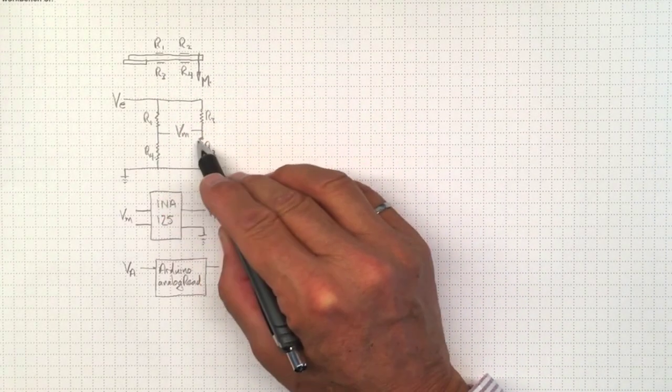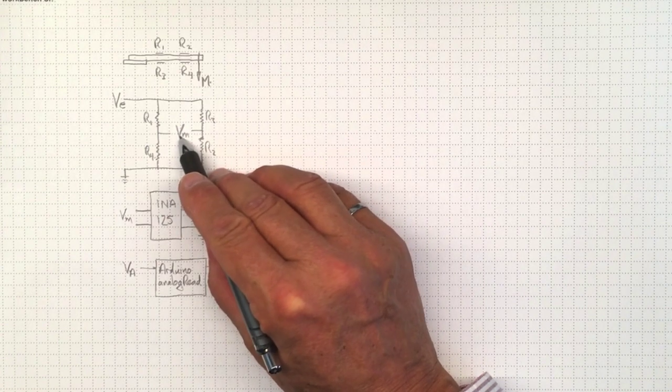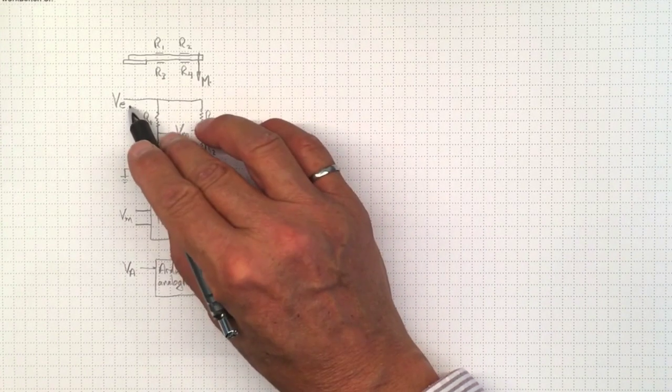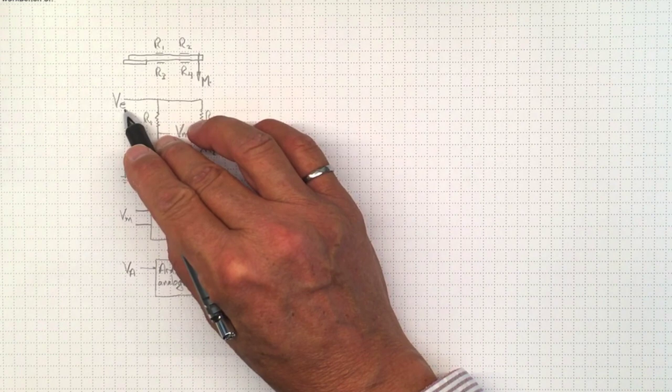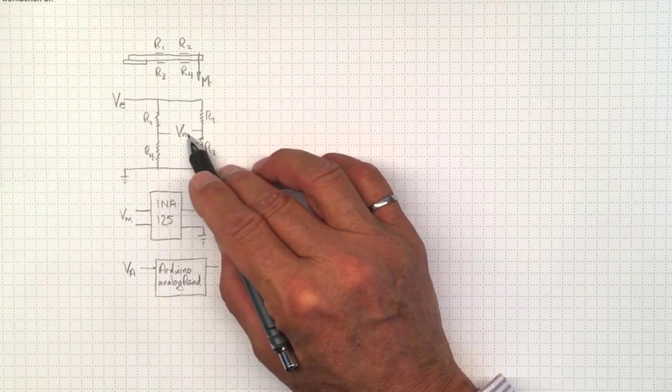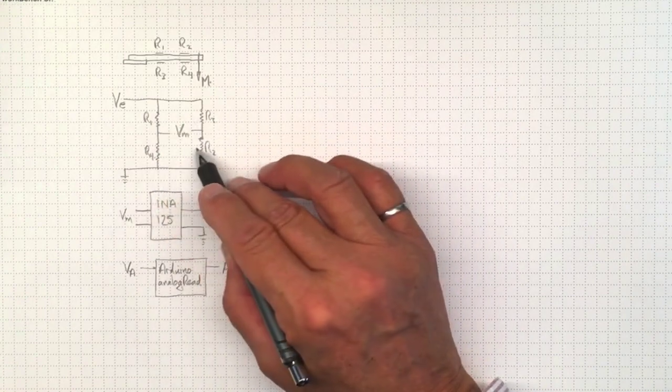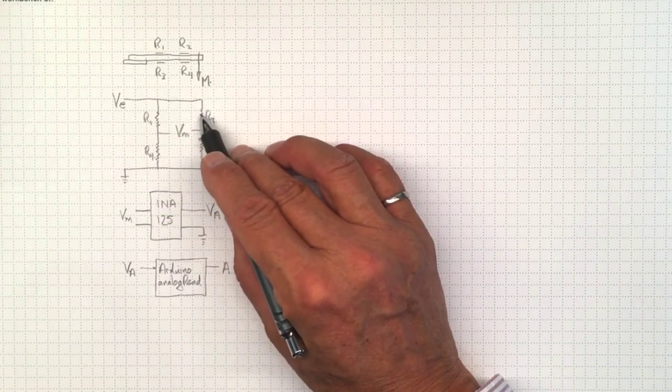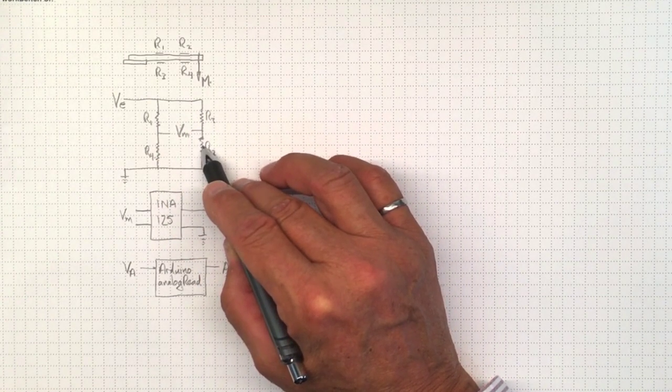So if we've got those resistances hooked up in a Wheatstone bridge, then we'll see that this measured voltage, which is going to be proportional to this excitation voltage, the power supply voltage, this measured voltage will change as these resistances change. And we know that that's really close to being a linear relationship.